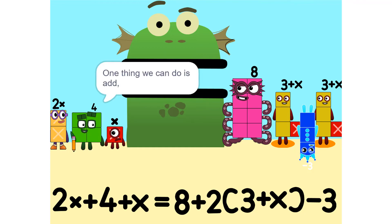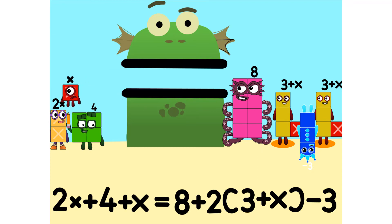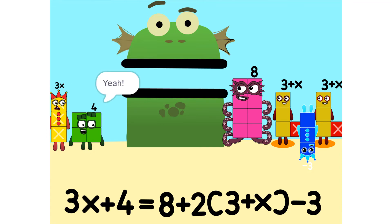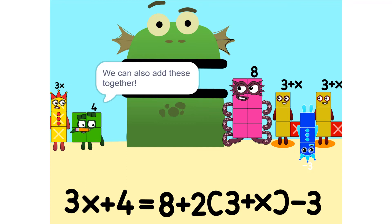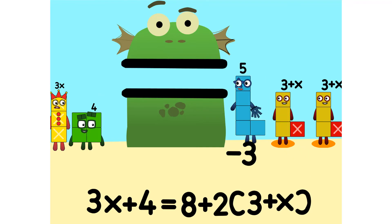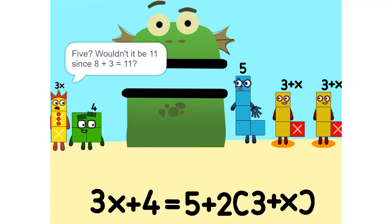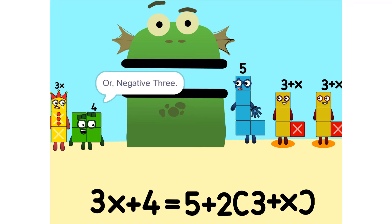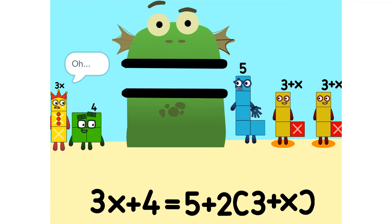One thing we can do is add these two together. How did you do that? We weren't even touching. They don't have to be. We can also add these together. 5. Wouldn't it be 11 since 8 plus 3 is 11? No, because we're adding together 8 and minus 3, or negative 3. So it's 5.